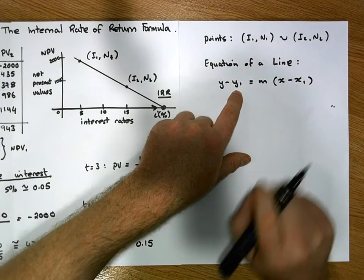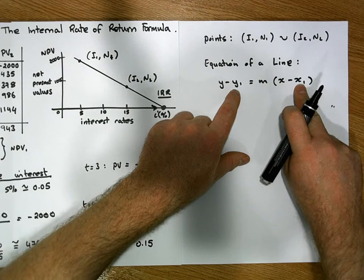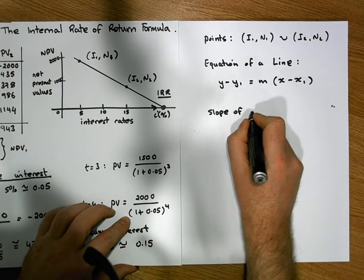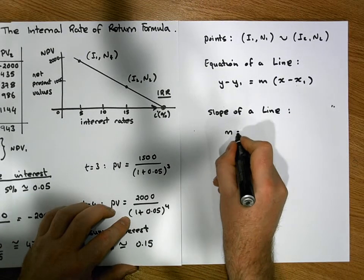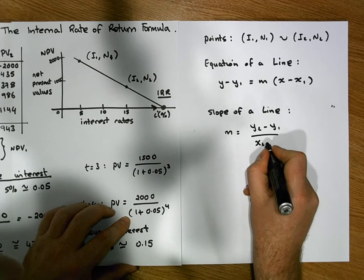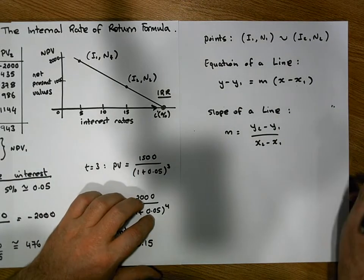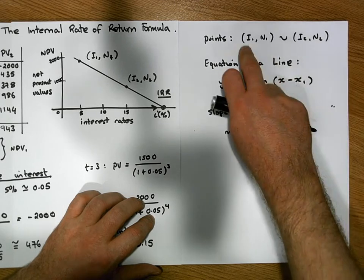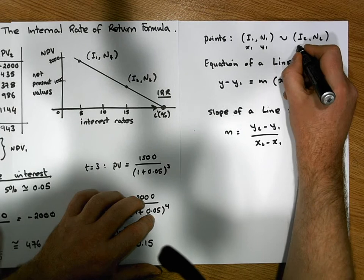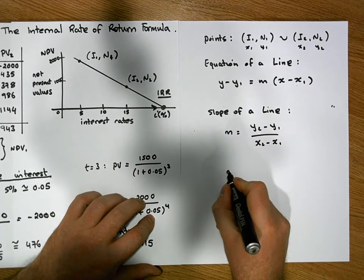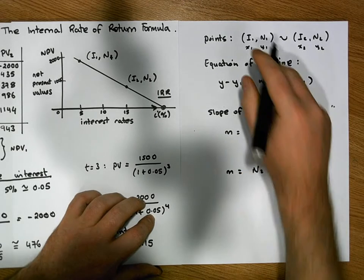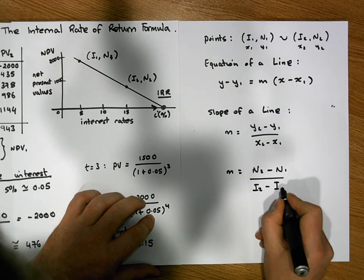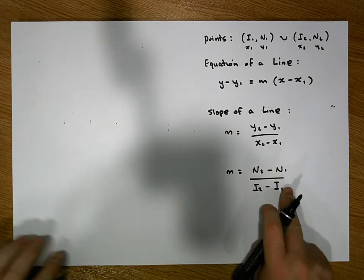Here, m is the slope of the line and (x1, y1) is a single point on the line. The slope of a line given two points is m = (y2 − y1) / (x2 − x1). In our situation, let's call one point (x1, y1) and the other (x2, y2), so the slope becomes m = (n2 − n1) / (i2 − i1).